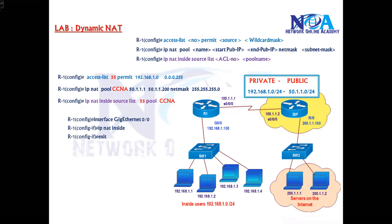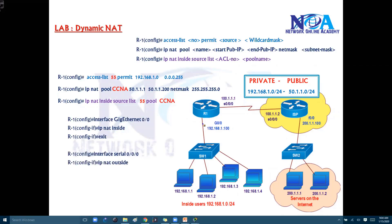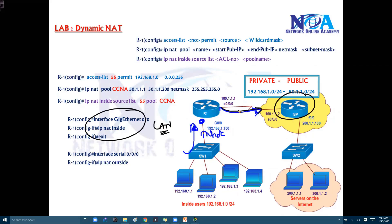The interface implementation is the same as in static NAT. The interface facing toward the LAN where private IPs originate is configured as 'ip nat inside,' and the interface connecting to the service provider is configured as 'ip nat outside.' If you define the wrong direction, NAT will not work, so make sure you apply the correct NAT configurations on the correct interfaces.